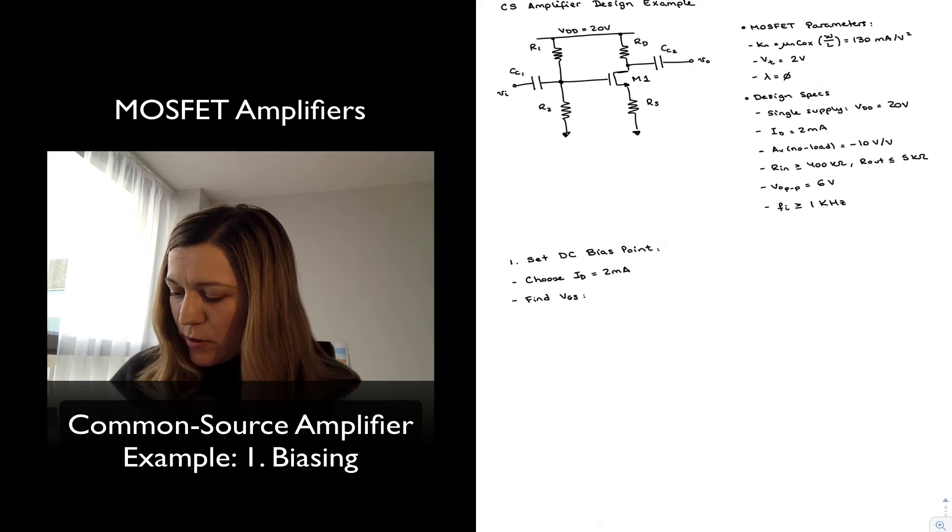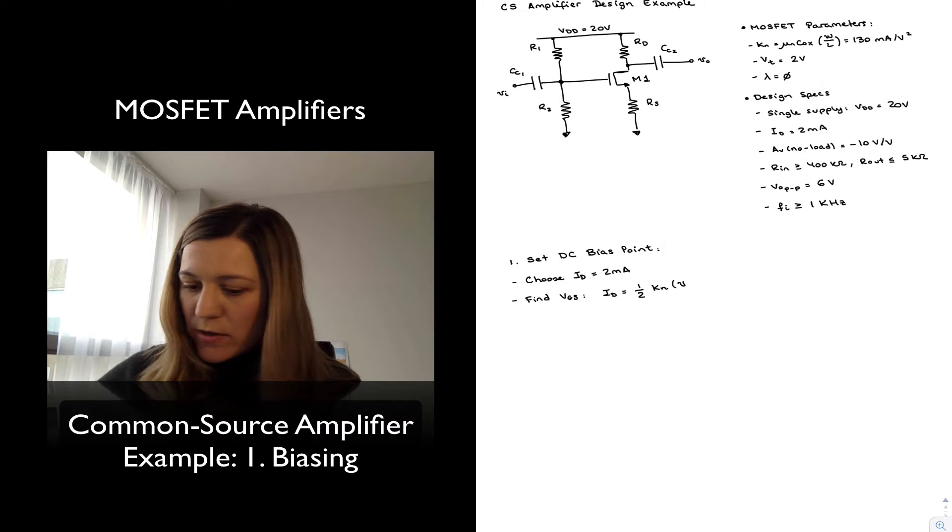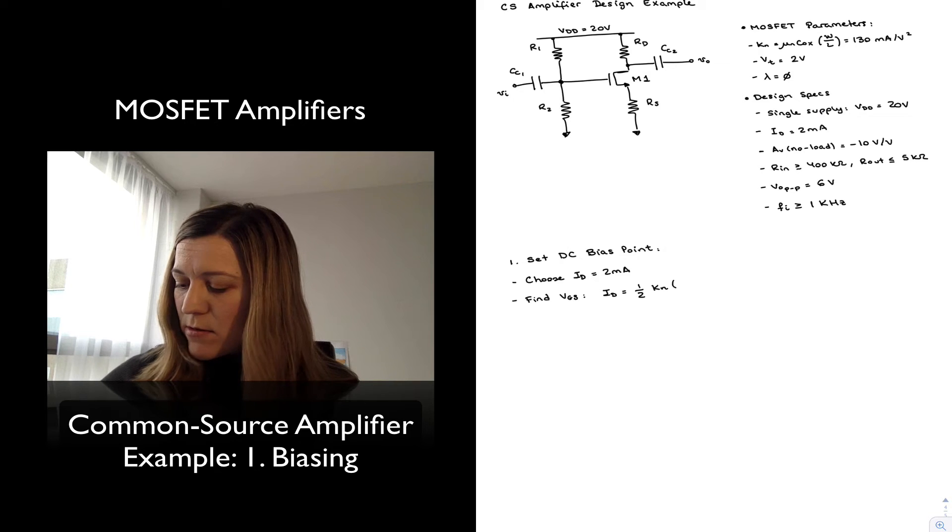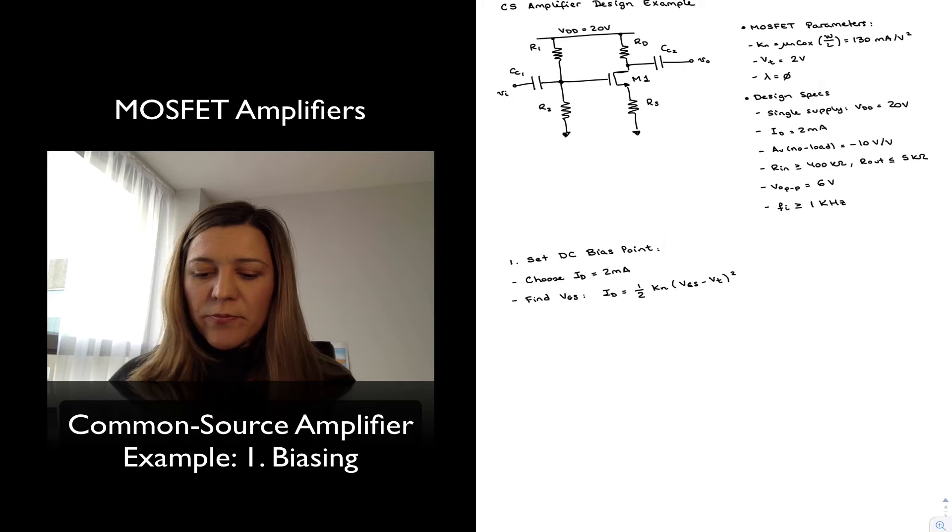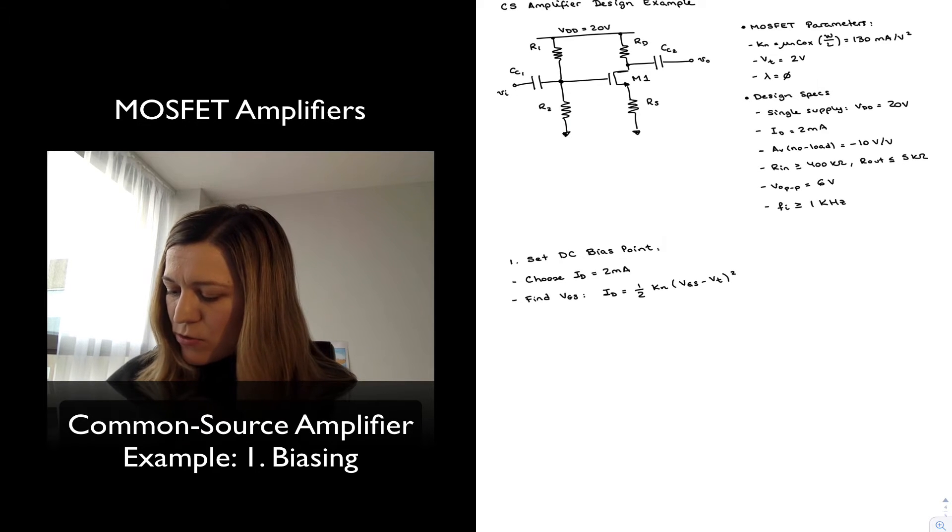It depends on the following equation: ID is equal to 0.5 Kn times (VGS - Vt)². I'm going to be using DC nomenclature because I'm dealing with the DC biasing circuit now.